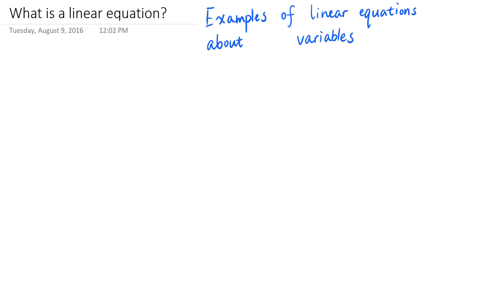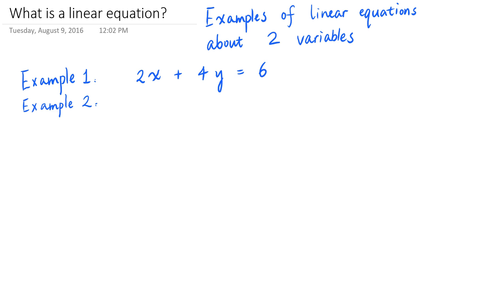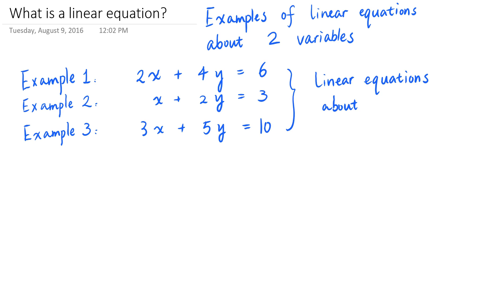Of course, we can have more variables. So for example, let's say we have two variables x and y. Then a linear equation about the two variables x and y looks like a number times x plus another number times y is equal to another number. So for example, 2x plus 4y is equal to 6, or x plus 2y is equal to 6, or 3 times x plus 5 times y is equal to 3, or 3 times x plus 5 times y is equal to 10. These are all linear equations about the variables x and y.